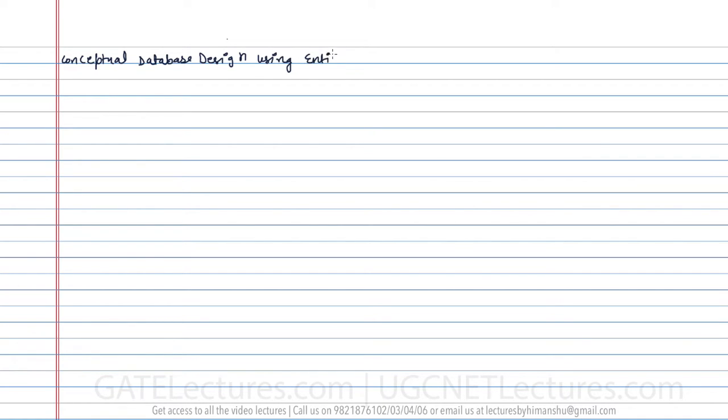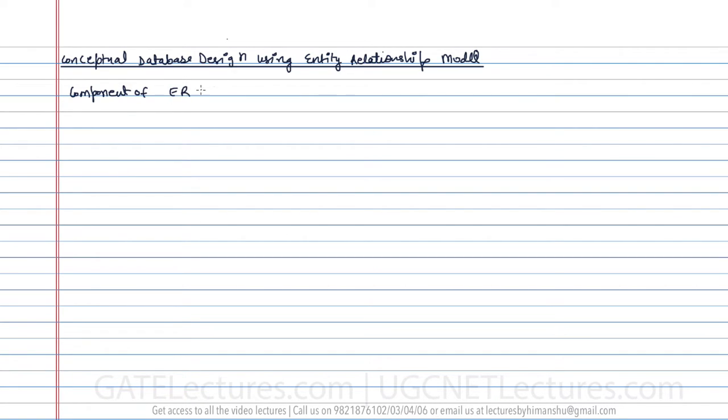We are going to start with conceptual database design using the entity relationship models, or ER models. For that, first we need to study some of the basic terminologies which we use in the ER model. So the different components of the ER model act as basic terminologies which we use throughout the ER model.